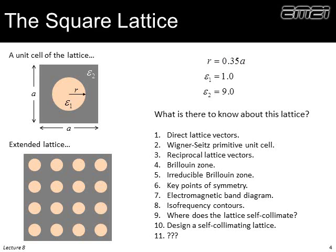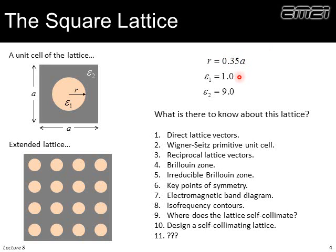We start off by defining what our lattice looks like. In this case it has a square unit cell, filled with some dielectric constant Epsilon 2, and in here is a dielectric cylinder of radius R and a dielectric constant Epsilon 1. The lattice spacing will be A. If we were to draw an extended lattice it might look something like this. For this example, the radius will be 0.35 times the lattice constant.